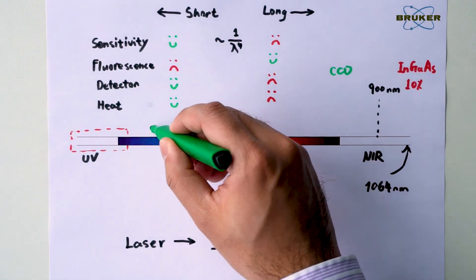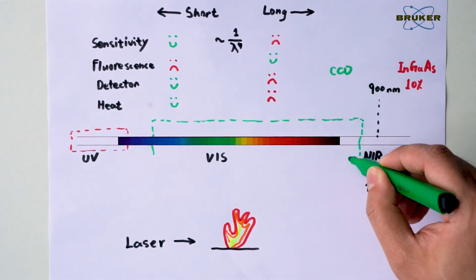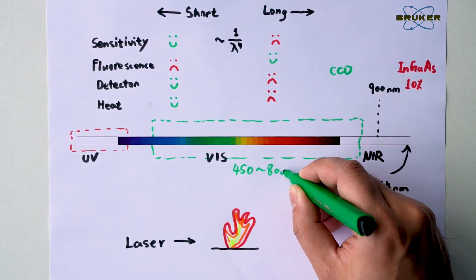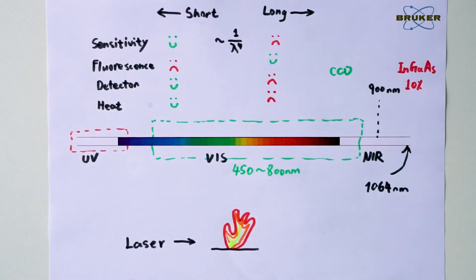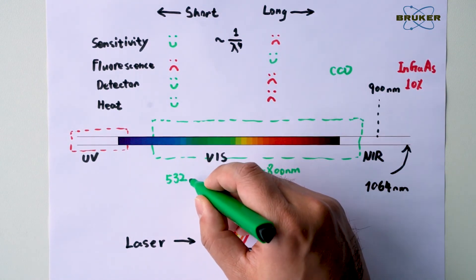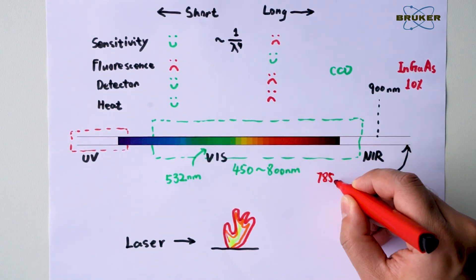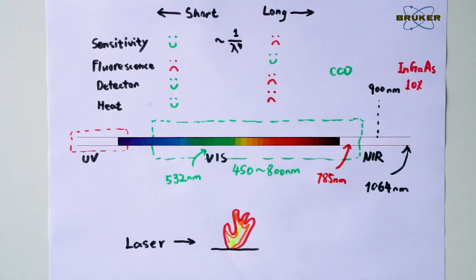Consequently, considering all these factors, most regular Raman measurements use lasers in range of 450 nm to 800 nm. And the two most widely used are 532 nm green laser and 785 nm infrared laser.